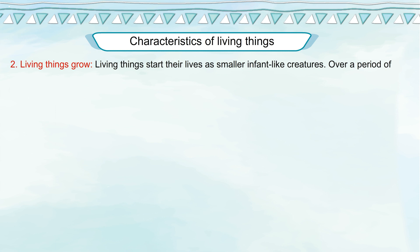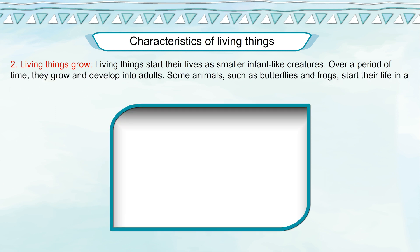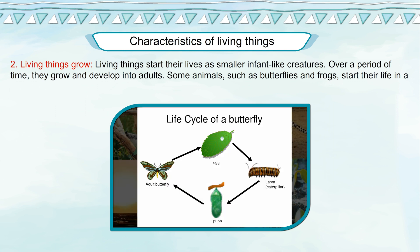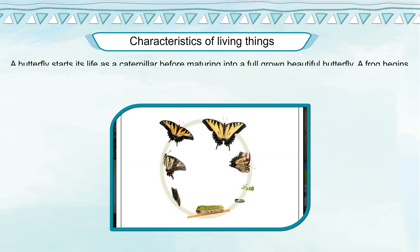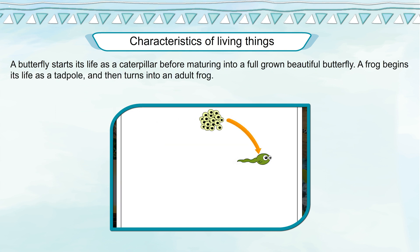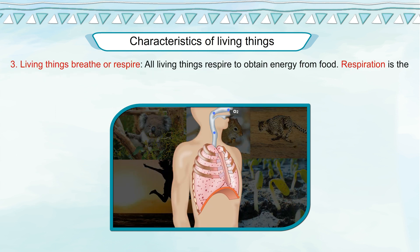Living Things Grow: Living things start their lives as smaller, infant-like creatures. Over a period of time, they grow and develop into adults. Some animals, such as butterflies and frogs, start their life in a completely different form and then change largely as they grow. A butterfly starts its life as a caterpillar before maturing into a full-grown beautiful butterfly. A frog begins its life as a tadpole and then turns into an adult frog.